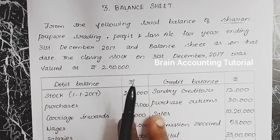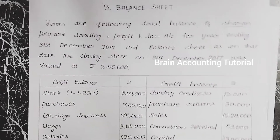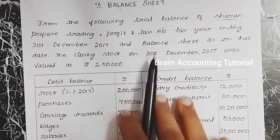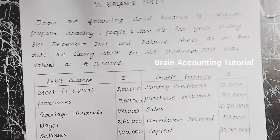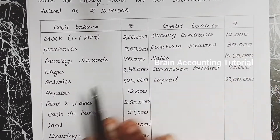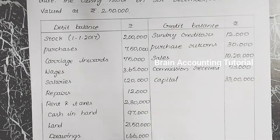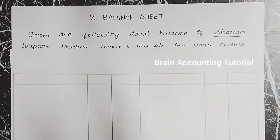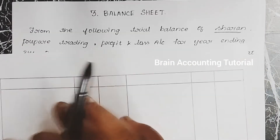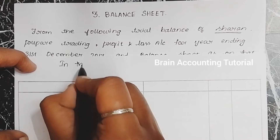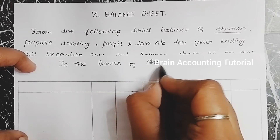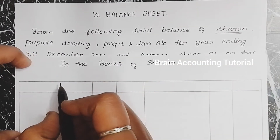Format is very important. Now let's start with the format. If you have a question, you will follow this step. We write 'In the books of Sharon' — that is the dealer's name — at the top of the format.